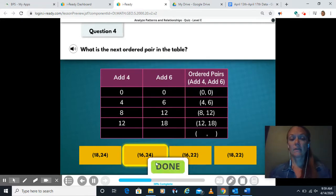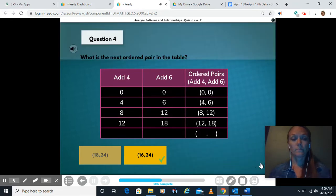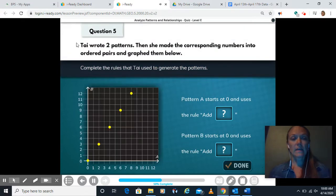So here's what we're going to do here. Ty wrote two patterns, then she made the corresponding numbers into ordered pairs and graphed them. So here's the graph as she made it. Pattern A starts at zero and uses the rule add what? So we're at zero here. They added how much going this way? She went over two. Two, two, over two each time. So every time she's adding two.